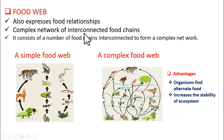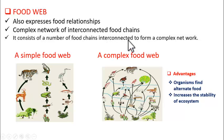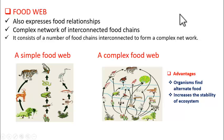Now let us see about food webs. What is a food web? Food webs are complex networks of interconnected food chains. In nature, food chains do not exist independently — they are actually interconnected with other food chains to form a complex network.